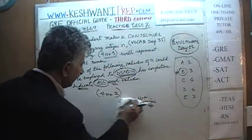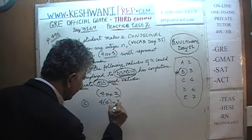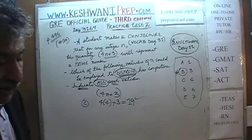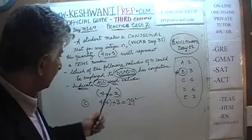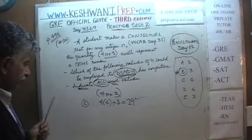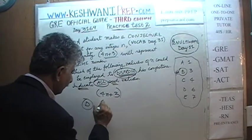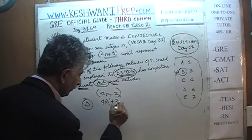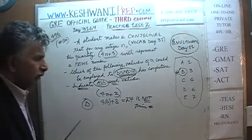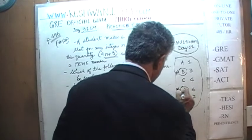For C, n equals 4: 4 times 4 plus 3 equals 19, and 19 is a prime number, so we are unable to disprove it — C is not an answer. For D, n equals 6: 4 times 6 plus 3 is 24 plus 3, which is 27. And 27 is not a prime number. We found one more value of n that disproves his conjecture. So far we have two answer choices: B and D. Let's look at the last one.